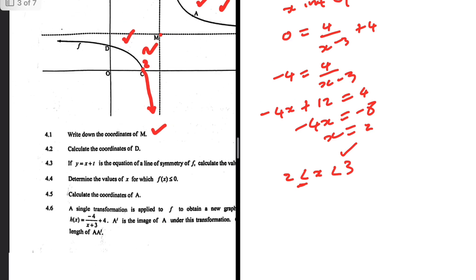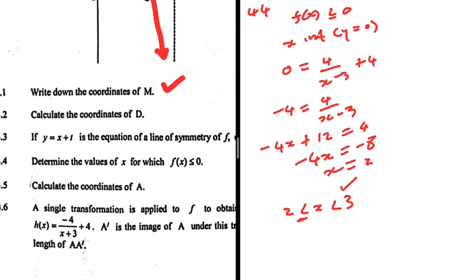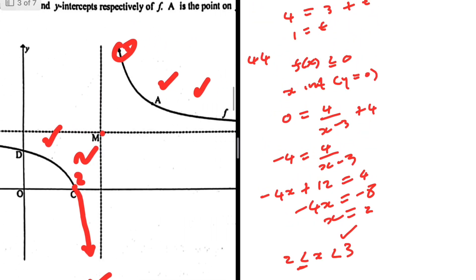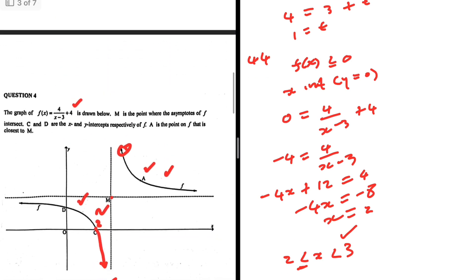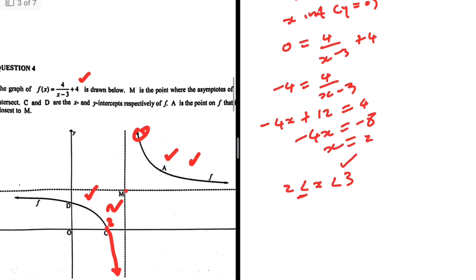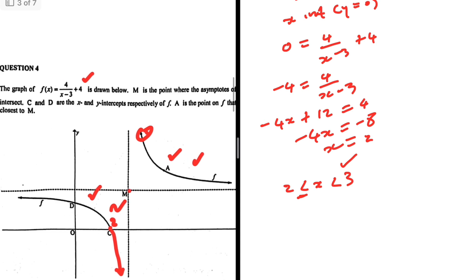So there we go. 4.4. 4.5 determines the coordinates of A. So what is A? Let's see. Okay, the question statement. A is the point on F that is closest to M.